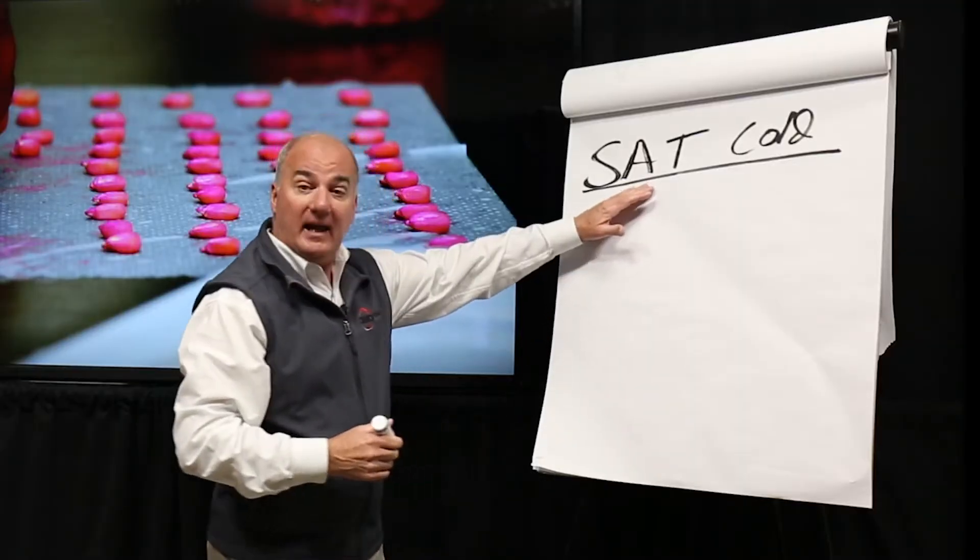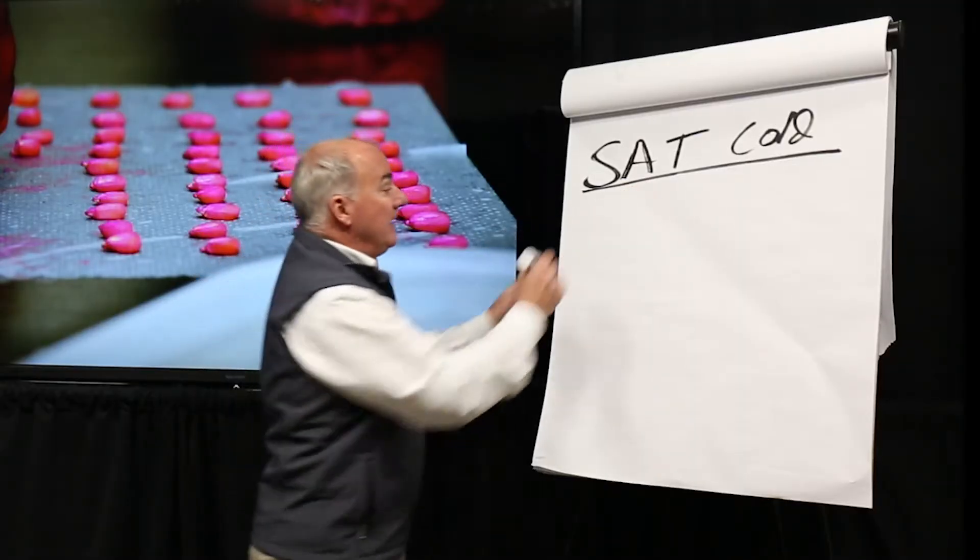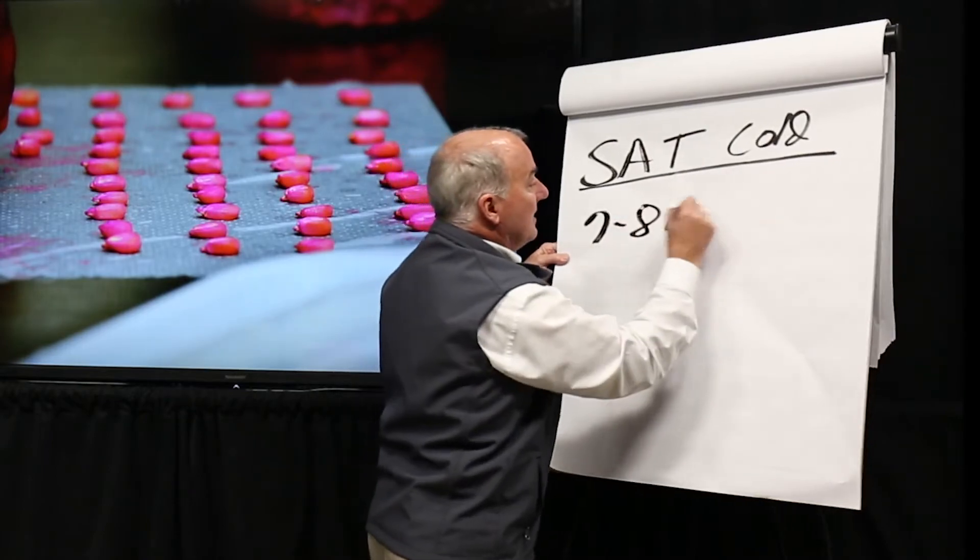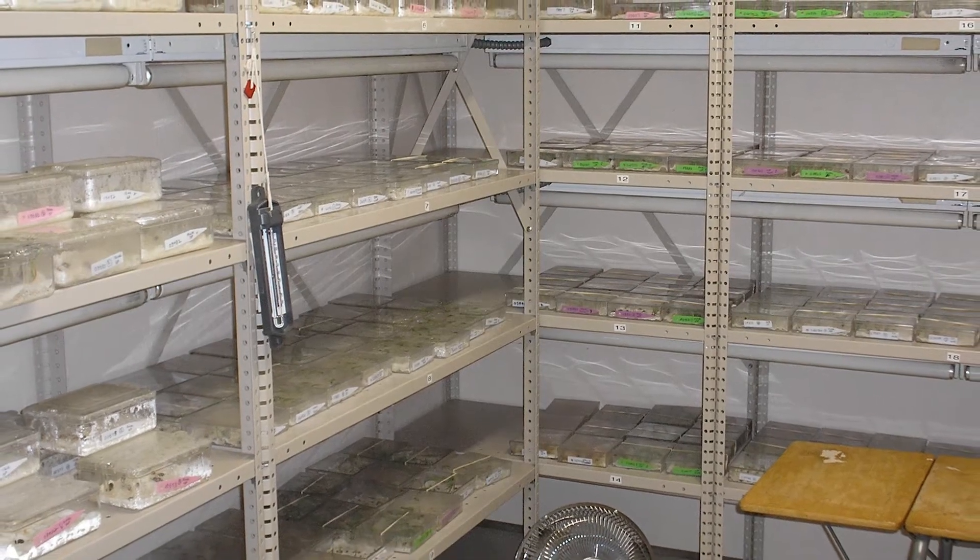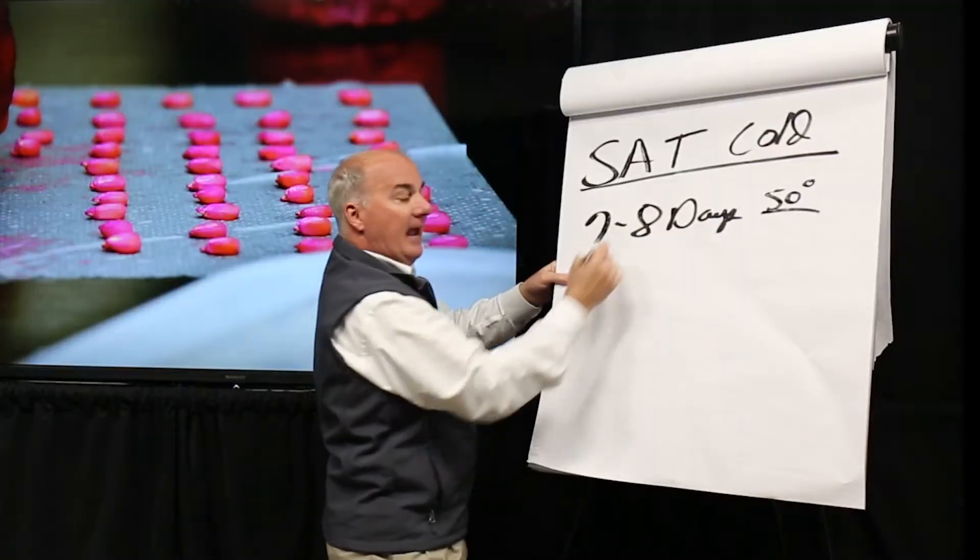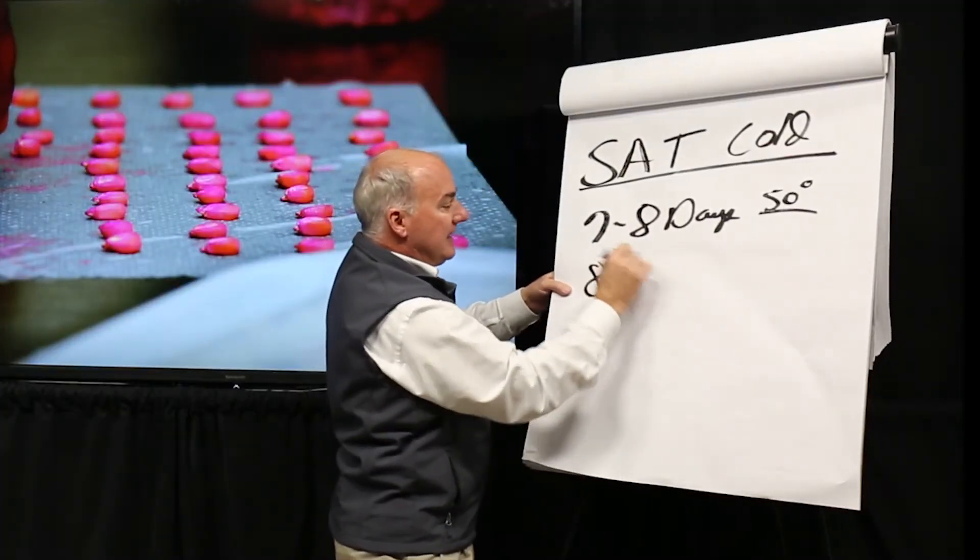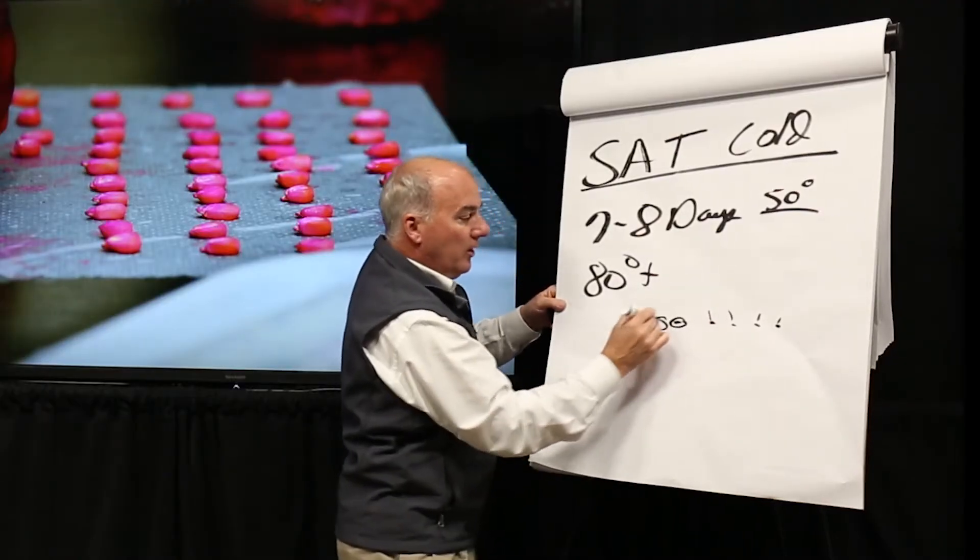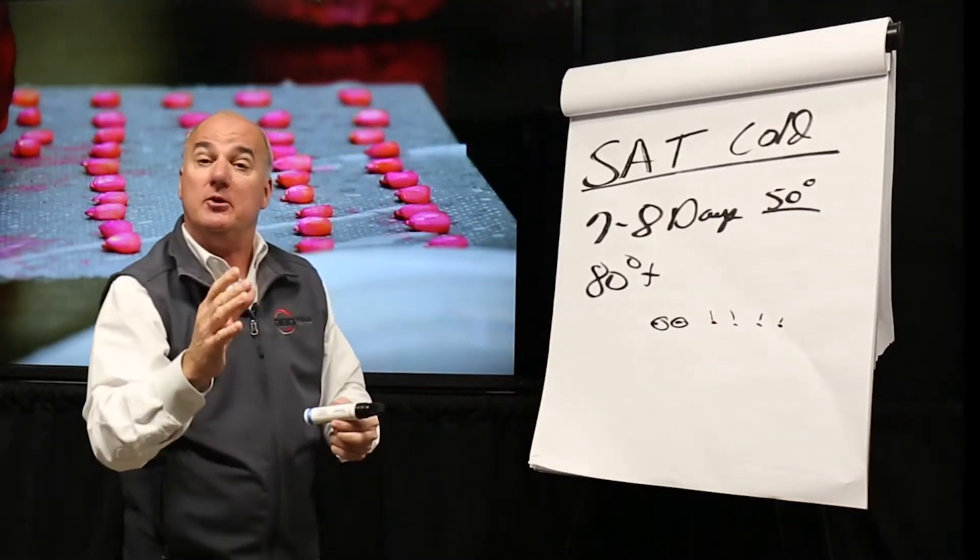This is going to go to the lab and they're going to keep that in about seven to eight days. They're going to hold that seed in wet towels for 50 degree temperature. Then after the eighth day, they're going to warm it up to 80 degrees plus and they're just going to count all that hundred seed sample, which ones grow and which ones don't, and they're going to give you a score.